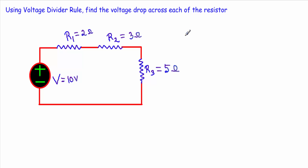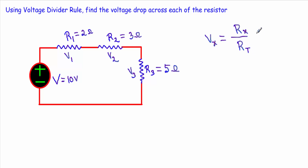Now to clarify this final conclusion, let me show you an example. In a series circuit, the higher the value of the resistor, the more of the total voltage will be dropped across it. Here we have three resistors R1, R2, and R3 with values 2 ohm, 3 ohm, and 5 ohm, and we are supplying 10 volts. Voltage drop across R1 is V1, across R2 is V2, and across R3 is V3. Applying the voltage divider rule: Vx equals the resistor value divided by total series resistance, multiplied by total supply voltage Vt.